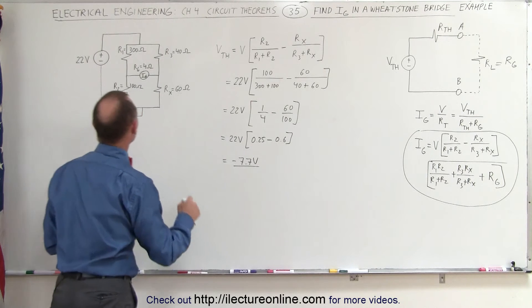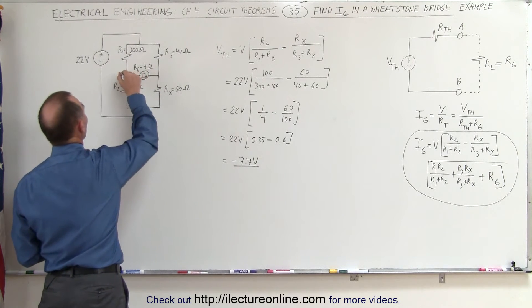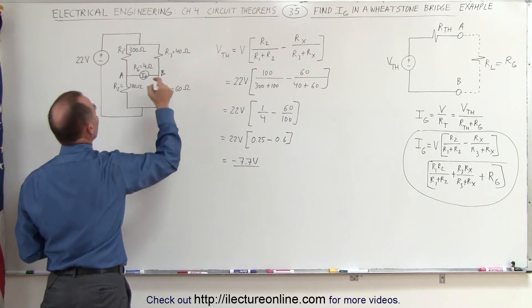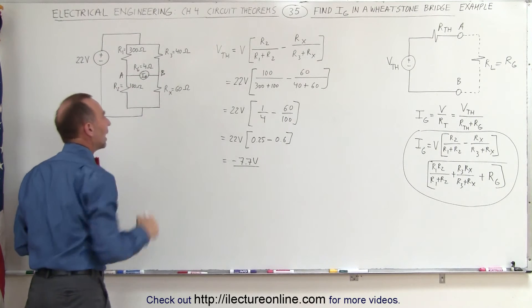which means that the current, instead of flowing from A to B, if I call this point A and call this point B, it'll actually flow from point B to point A.